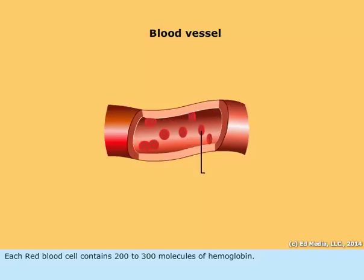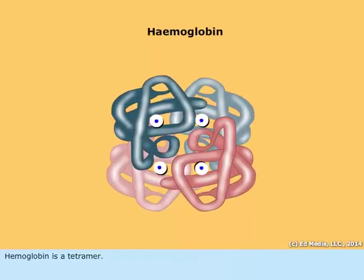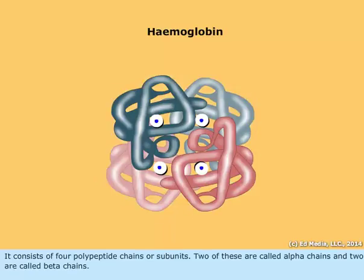Each red blood cell contains 200 to 300 molecules of hemoglobin. Hemoglobin is a tetramer — it consists of four polypeptide chains or subunits. Two of these are called alpha chains and two are called beta chains.